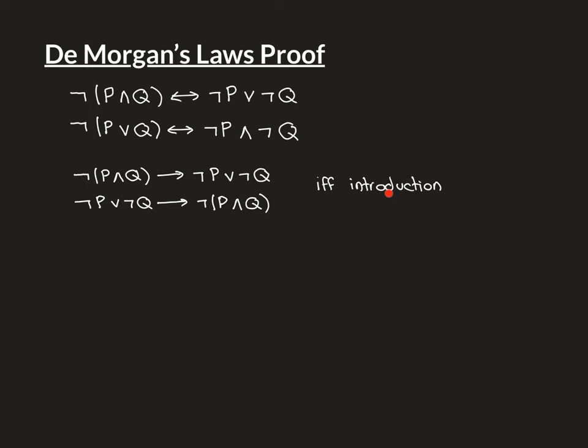So we need to show that these two implications are true. We'll start with the first one. To arrive at an implication, there is a rule of inference called implication introduction. It says that you take the antecedent as a premise, and if you can show that from this you can arrive at the consequent, then you have the full implication proposition. That's the rule of implication introduction.